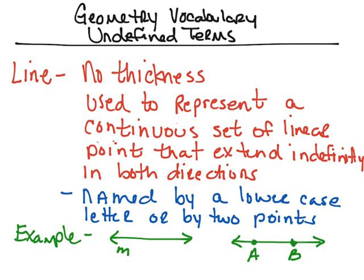When naming a line, we can either use a lowercase letter to describe the line, or we can use two points on that line. In the first example, we have a line with little arrows showing it extends indefinitely in both directions, and I used a lowercase letter M. In the second example, I chose two points on the line, A and B, and describe this as line AB. Because these are points, we use capital letters.